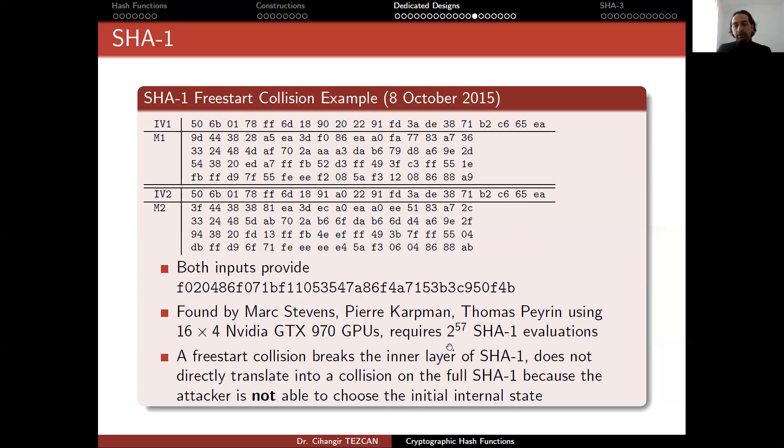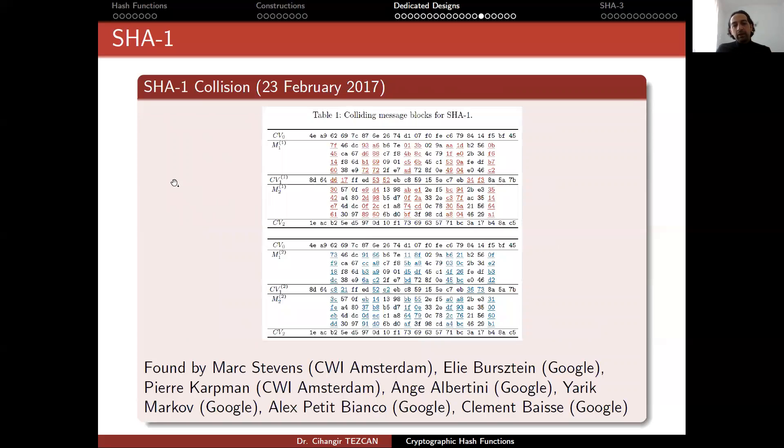Their claim was actually correct because two years later, they teamed up with Google because Google had a lot of GPUs. They said that they can use their GPUs. We don't know the exact number. Google never provided how many GPUs were used and how long it took. But in this case, they obtained the SHA-1 collision.